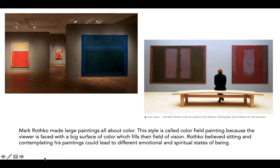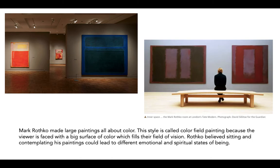One of my favorite painters is named Mark Rothko and he made large paintings all about color. This style is called color field painting because the viewer is faced with a big surface of color which fills their field of vision. Rothko believed sitting and contemplating his paintings could lead to different emotional and spiritual states of being. So some artwork actually asks that you sit with it and spend time with it — it might not tell you everything it has to say at one first glance.